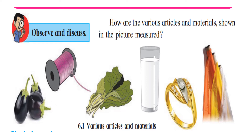So how are the various articles and materials shown in the picture measured? Vegetables are measured in kilograms or grams. Thread is measured in length — so we can have centimeters or meters. Leafy vegetables are measured in bunches. Milk is measured in liters. Gold is measured in grams, but diamond is measured in a different way — it is called carats. And cloth is measured in meters.